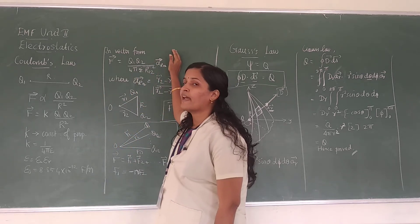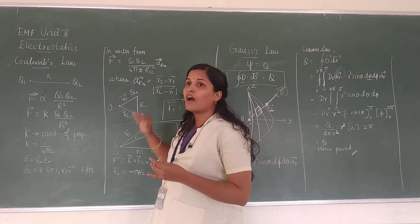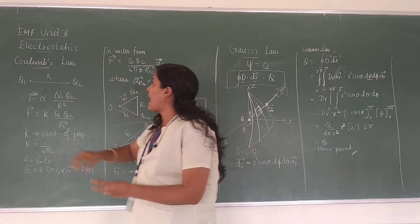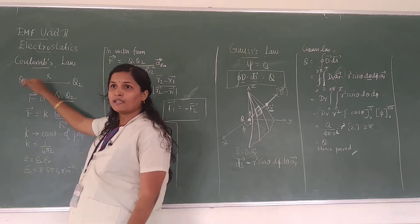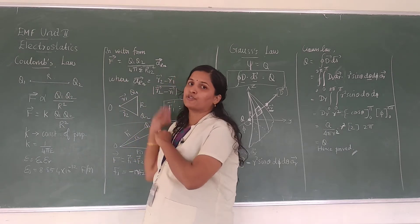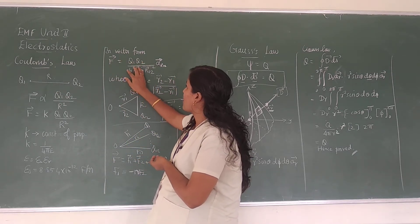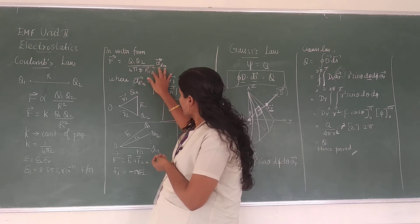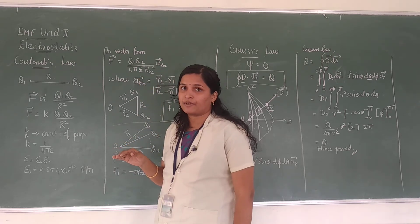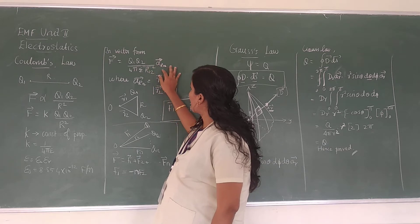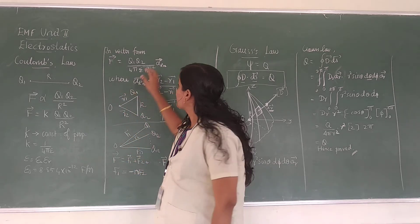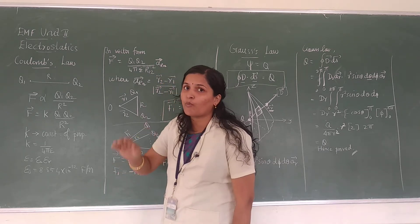Now let us see Coulomb's law in vector form. Vector form means we have to write it with direction — we have to consider the direction also. So let us write the force acting at point 1 from point 1 to point 2. The force F12 is Q1 times Q2 divided by 4πε, divided by R12 squared. Here R12 means we have to consider the direction from 1 to 2. For vector form we must mention the unit vector, so we include the unit vector A R12 from 1 to 2.